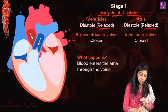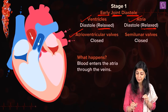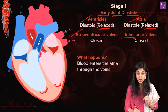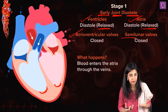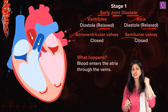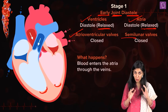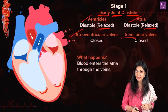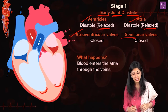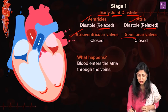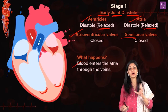Early joint diastole — 'joint' because both the ventricles and atria are relaxed. At this stage, both the AV (atrioventricular) valves and the semilunar valves are closed because there is no pressure created. Since there are arteries and veins connected, deoxygenated blood comes from body tissues and oxygenated blood comes from the lungs to the left side. In early joint diastole, the blood enters and fills the atria.